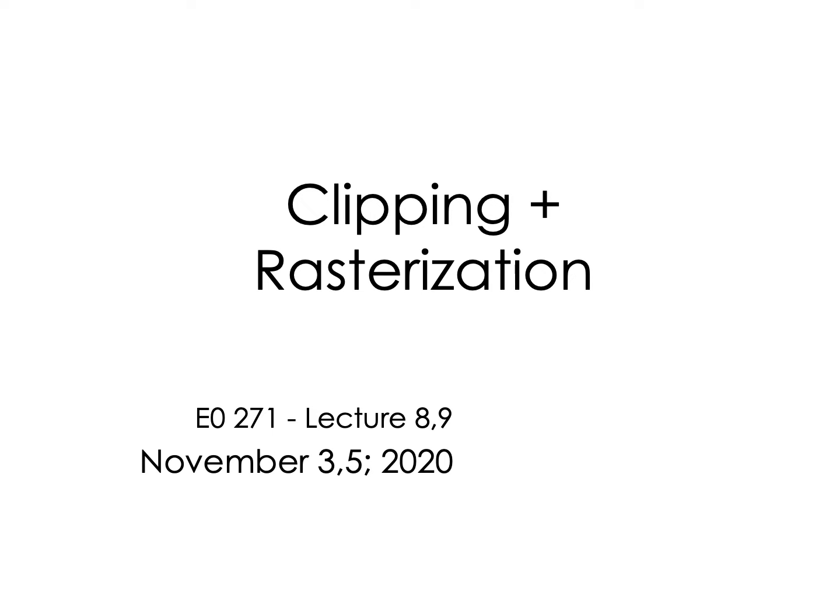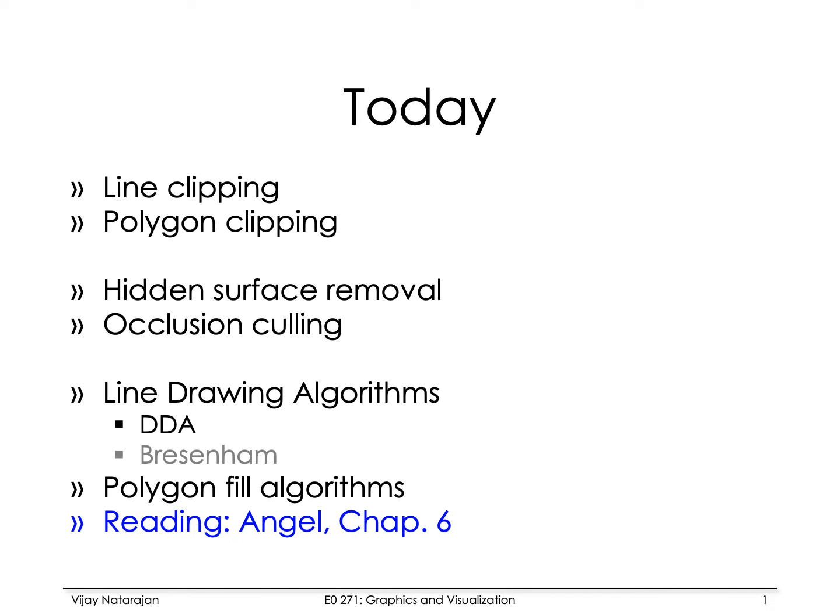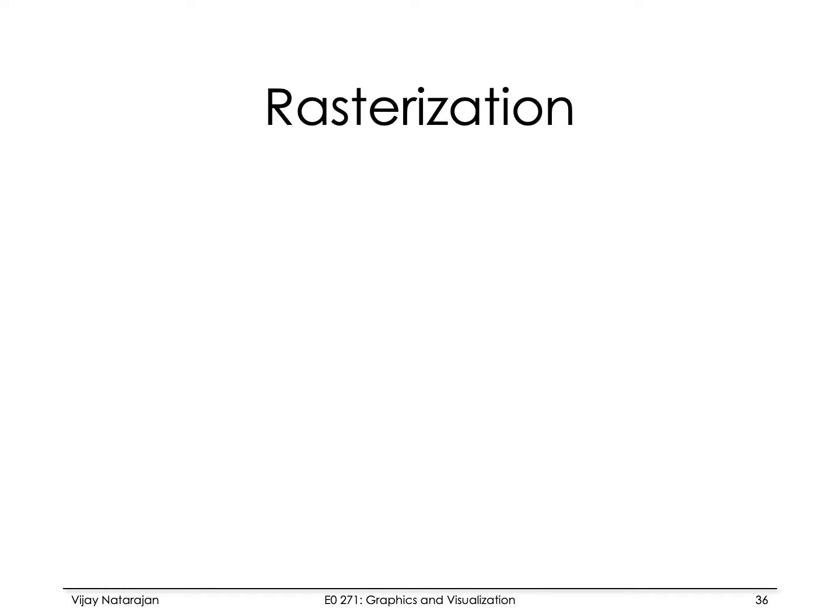Now that we have talked about clipping, let's move on to rasterization — the stage where the projected geometric elements are converted into a raster image. More specifically, we will be talking about line drawing algorithms. I will talk about one specific algorithm called the DDA, and then we will move on to the more interesting polygon fill or triangle fill algorithms. Rasterization is the stage where we convert the projected geometric primitives into a raster image. Rasterization is also called scan conversion.